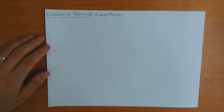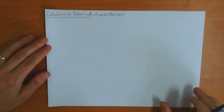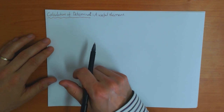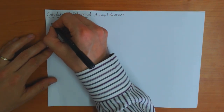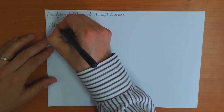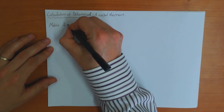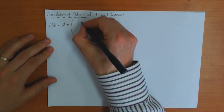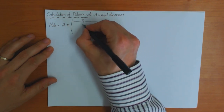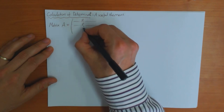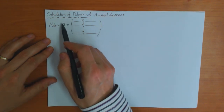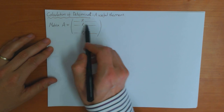Before I go on to tell you how to calculate the inverse of a matrix, I want to give you a useful theorem which you can use to greatly simplify the calculation of a determinant. Suppose I've got a matrix A — I can write A in terms of a number of rows or columns: row number 1, that's an n-vector; row number 2, that's another n-vector; and so on down to row n. So I can divide matrix A into n rows like this.